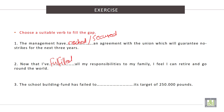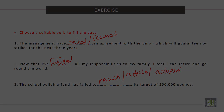And the last one. The school building fund has failed to reach its target of £250,000. More than one verb could be used here: we can use 'reach', 'attain', or 'achieve'. So the school building fund has failed to reach, attain, or achieve its target of £250,000. Thank you very much and see you next time.